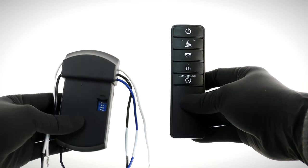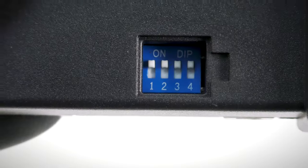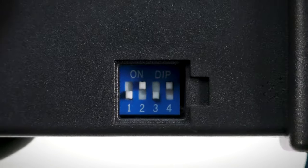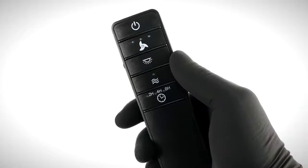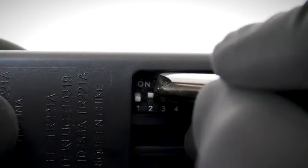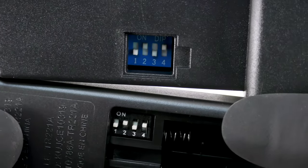If you are installing multiple fans or experiencing interference from other devices, the remote and receiver frequencies can be changed. Locate the dip switches on the receiver and change the dip switch code. Remove the battery cover on the remote and duplicate the code. The dip switch codes must match or the fan will not function.